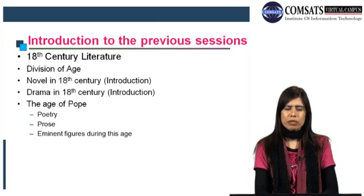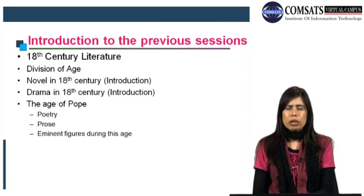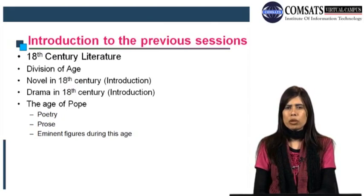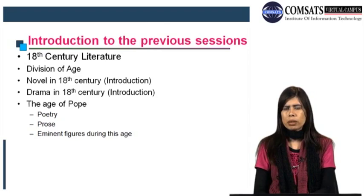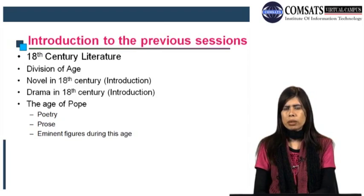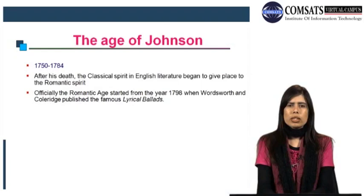Sometimes we also put Dryden, who belongs to the Restoration period, here in the 18th century as a spirit, because this is known as the Age of Reason — everything is based on intellect and reason. When we talk about 18th century literature, it is divided into two eras: one is the Age of Pope and the other is the Age of Johnson. We already discussed the Age of Pope in detail. Today we will go for the Age of Johnson, which started in 1750 and ended in 1784.